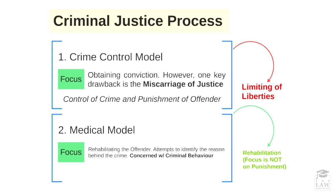These don't necessarily relate to a complete or exhaustive list of models that have been employed, but just to give you an idea of the various theories that are employed in order to process criminals through a criminal justice process of respective countries. The first model, the crime control model, is in fact a very obvious notion. The primary objective of a crime control model is to limit the liberties of offenders, so the focus thereof is to obtain a conviction.